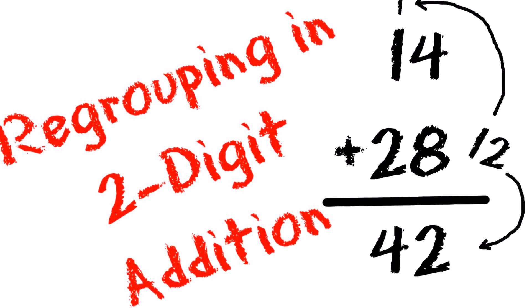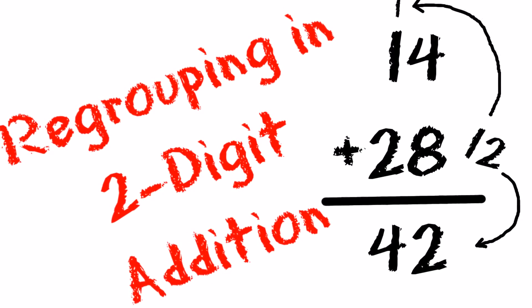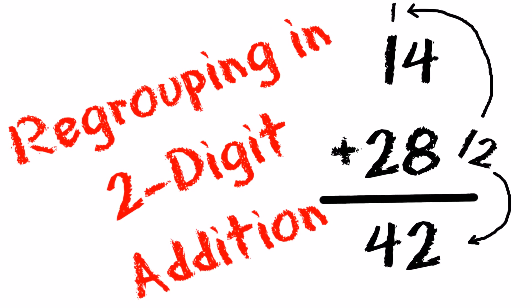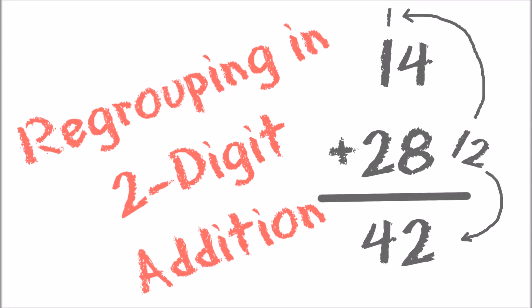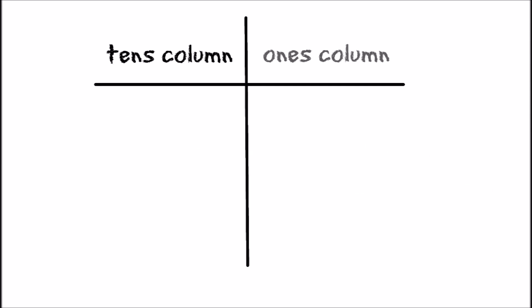Hi everyone! Today we're going to talk about regrouping in two digit addition. When we write numbers with two digits, we have to pay attention to where the numbers are written, because how much they are worth changes based on where they are. This is called place value. When we're adding two digit numbers, we only have two places to worry about, and those are the tens column and the ones column.